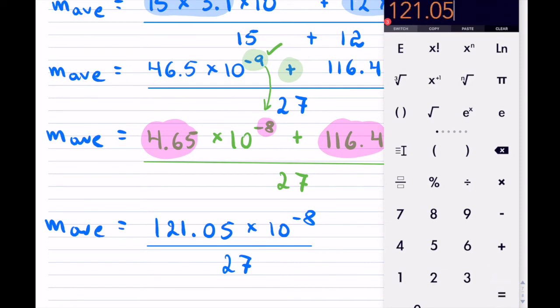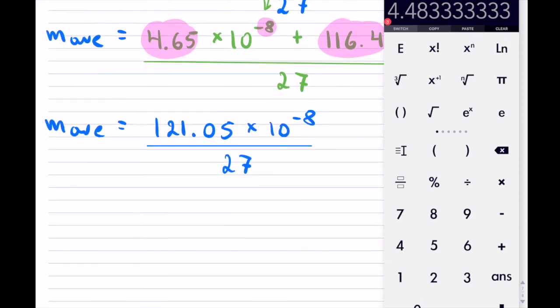So we can take that divided by 27, and that comes out to 4.483... times 10 to the minus 8.